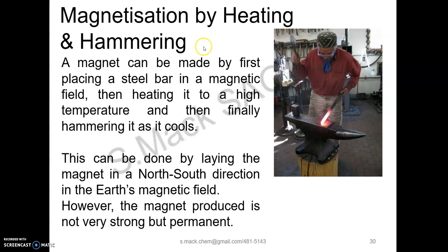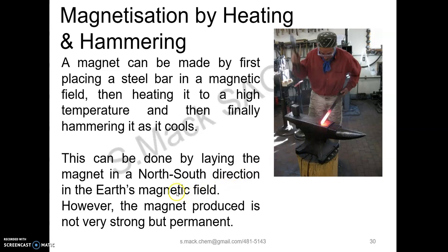In making a permanent magnet, we first use a steel bar. The steel bar is placed in a magnetic field — it can be the Earth's magnetic field. It is heated to a very high temperature and it is hammered as it is cooled.